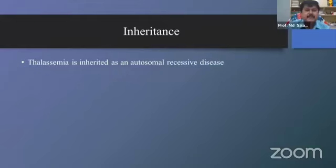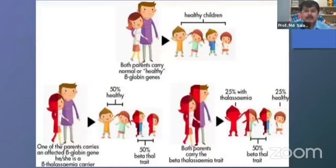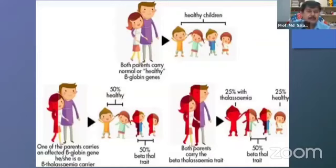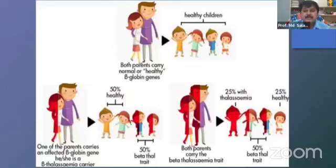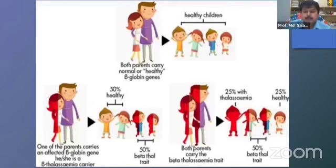Thalassemia is inherited as an autosomal recessive disorder. When both parents are healthy, all children will be healthy. When one parent — husband or wife — is a carrier, then 50% of children will be healthy and 50% will be thalassemia trait. When both parents are carriers, 25% will have thalassemia, 50% will be thalassemia trait, and 25% will be healthy. We would like to motivate people not to marry between two thalassemia trait carriers.